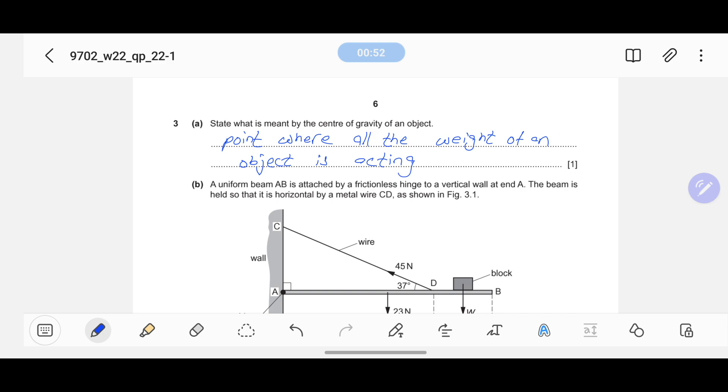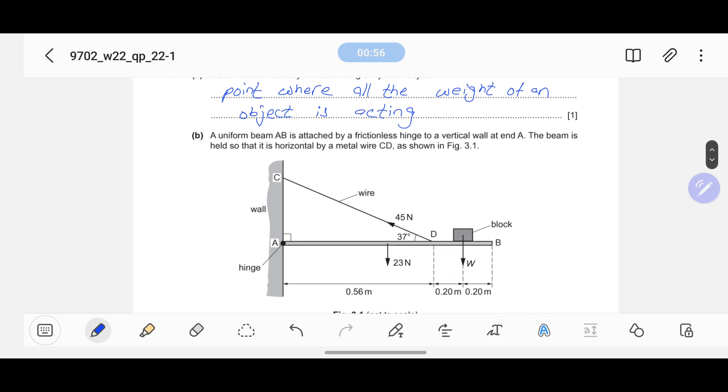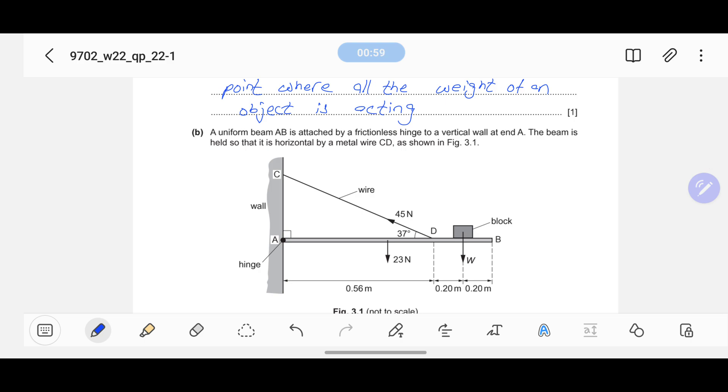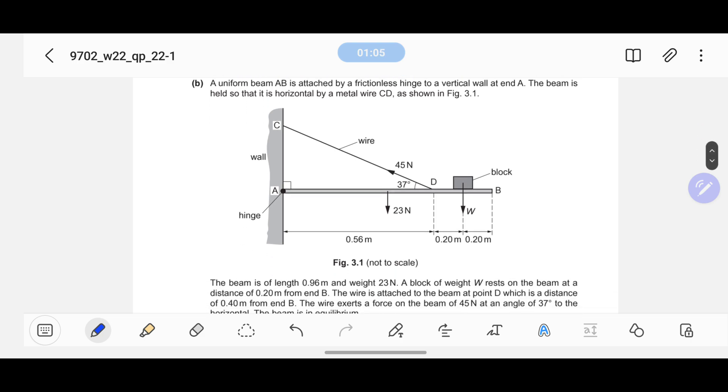A uniform beam AB is attached by a frictionless hinge to a vertical wall at end A. The beam is held so that it is horizontal by a metal wire CD as shown in figure 3.1.